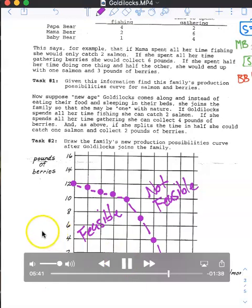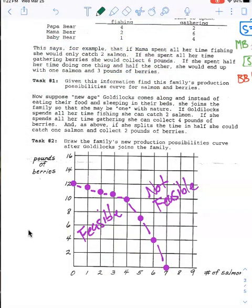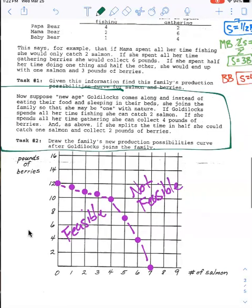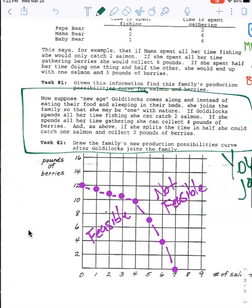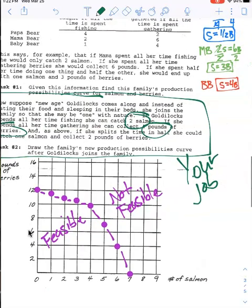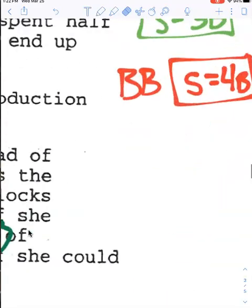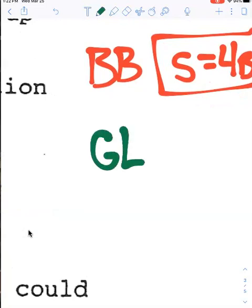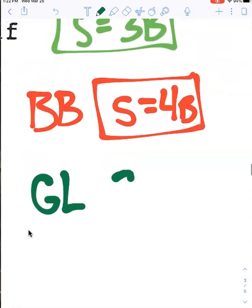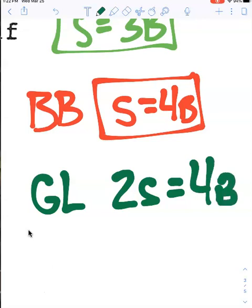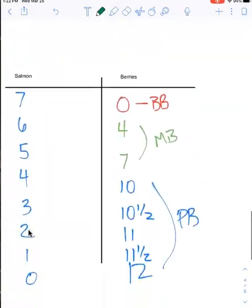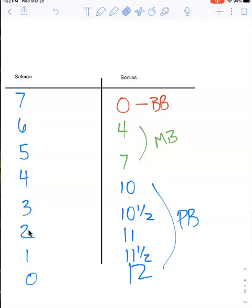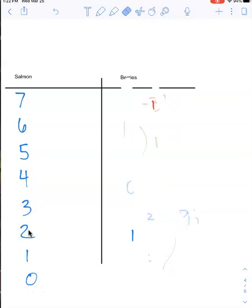So your task is going to be to look at part two. And suppose that New Age Goldilocks comes along, and instead of eating food and sleeping in their bed, she's going to join the family so she can become one with nature. She's Zen Goldilocks. So she can catch two salmon in a day up to that or gather four pounds of berries. So if you added her to that chart, we've got to calculate what is her opportunity cost, and I'm helping you set it up here. I'm going to use green for Goldilocks. And so for her, two salmon is the equivalent of four pounds of berries. So you need to calculate her opportunity cost and then figure out where she fits in with the family.